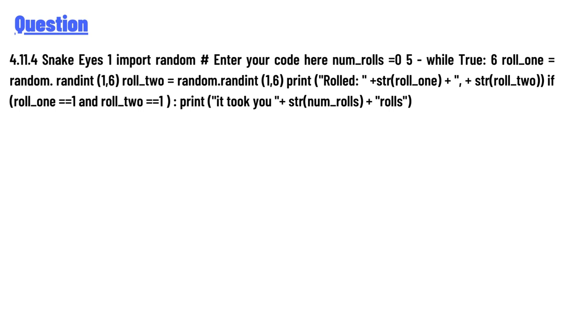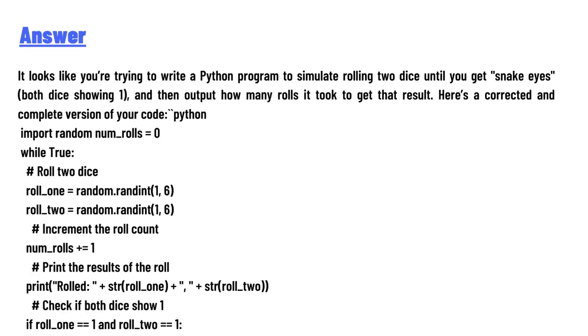The answer to the question is: it looks like you're trying to write a Python program to simulate rolling two dice until you get snake eyes (both dice showing 1), and then output how many rolls it took to get that result. Here's a corrected and complete version of your code. Python: import random, num_rolls = 0.